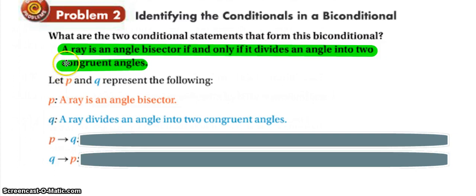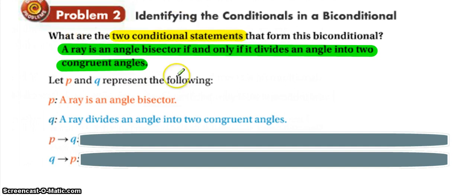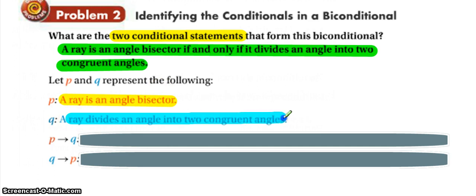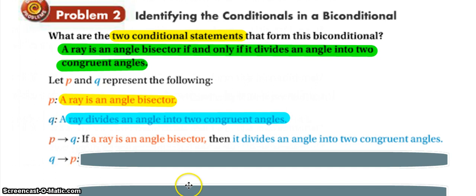In problem two, we have the bi-conditional: a ray is an angle bisector if and only if it divides an angle into two congruent angles. We want to write the two conditional statements that come from this bi-conditional. Our hypothesis P is 'a ray is an angle bisector,' and our conclusion is 'that ray divides the angle into two congruent angles.' So our 'if P, then Q' statement is: if a ray is an angle bisector, then it divides the angle into two congruent angles.